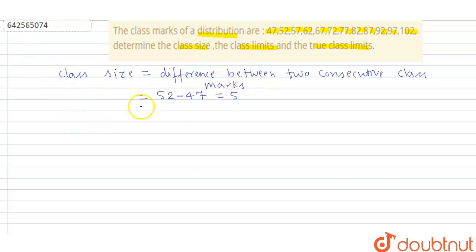Now, we have to write class limits. So first of all, here lower limit, lower limit equals class mark minus class size upon two. And upper limit is what? So first of all, we have to find lower limit. So here for 47, 47 minus class size 5 by 2. So here 47 minus 2.5 or we can write here 44.5.